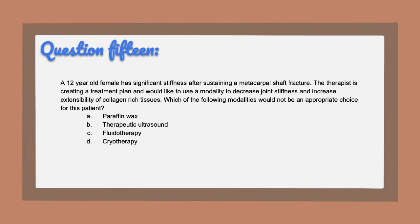Question fifteen: a 12-year-old female has significant stiffness after sustaining a metacarpal shaft fracture. The therapist is creating a treatment plan and would like to use a modality to decrease joint stiffness and increase extensibility of collagen-rich tissues. Which of the following modalities would NOT be an appropriate choice for this patient? A, paraffin wax. B, therapeutic ultrasound. C, fluidotherapy. Or D, cryotherapy.